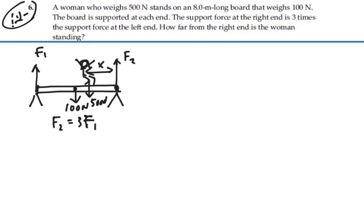We could apply either torque equilibrium or force equilibrium or both. Let's take a look at force equilibrium first. Summation of all the forces in the Y direction should be zero. And what do we have? We've got F1 plus F2, and in the opposite direction, we've got 100 newtons and the weight of the woman. So it's clear that F1 plus F2 equals 600 newtons.